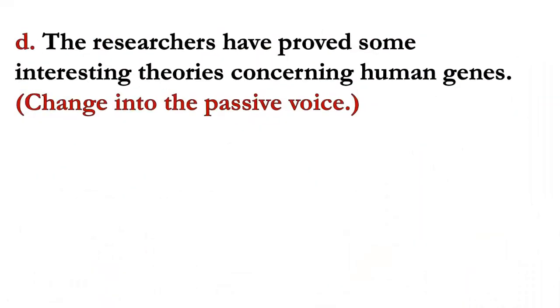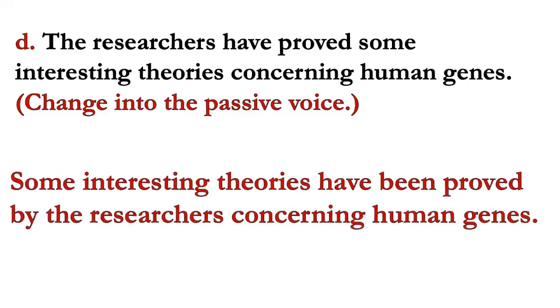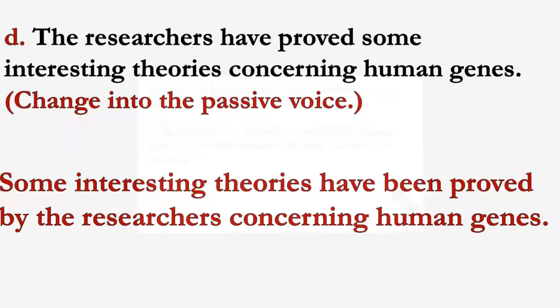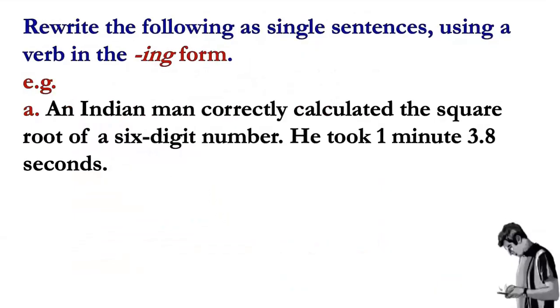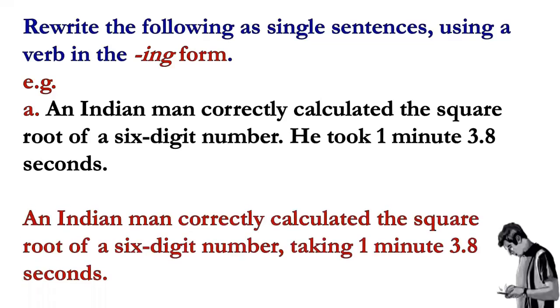In sentence D, the researchers have proved some interesting theories concerning human geniuses. Change into the passive voice. Some interesting theories have been proven. The answer would be: An Indian man correctly calculated the square root of a six-digit number, taking one minute, 3.8 seconds.